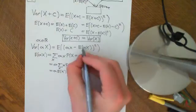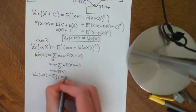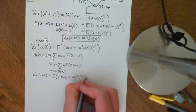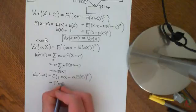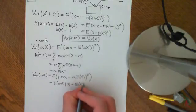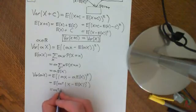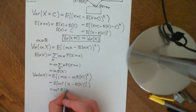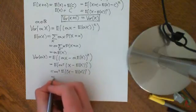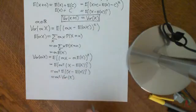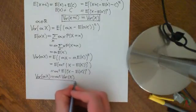Applying that: the variance of αX equals the expected value of (αX − α·E[X]) squared. We factor out α, and factoring it out of the square gives α². This becomes the expected value of α²·(X − E[X])². By linearity of the expected value function, we factor out α², giving α² times the expected value of (X − E[X])². That is α² times the variance of X. So Var(αX) = α²·Var(X) — another very important property.